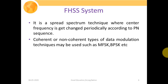Frequency hopping spread spectrum is a spread spectrum technique where the center frequency gets changed periodically according to the PN sequence. The central carrier frequency is not fixed — it keeps changing, and at which instant which frequency will be selected is totally determined by the random PN sequence. For modulation, coherent or non-coherent techniques such as MFSK or binary phase shifting can be used.